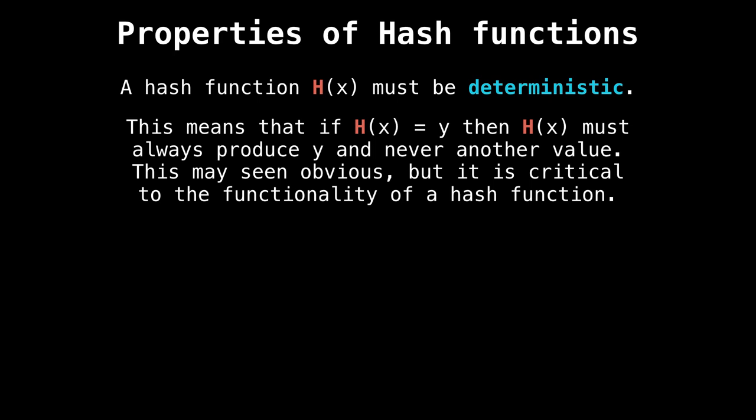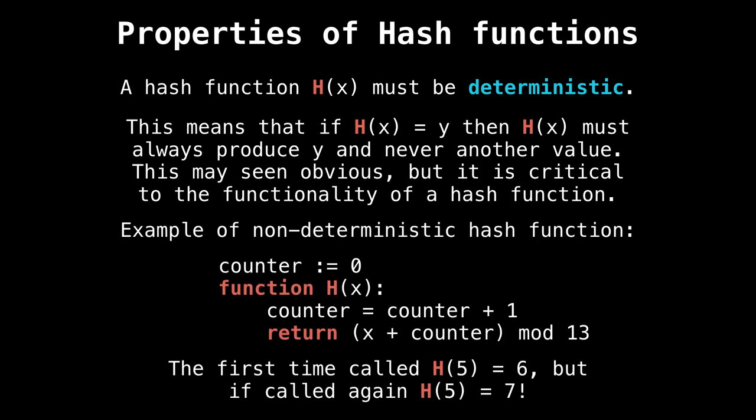Alright, another property of hash functions is that they must absolutely be deterministic. This means that if h of x produces y, then h of x must always, always, always produce y and never another value. This is super critical because this will screw up our hash table completely if this happens. We do not want this. So an example of a non-deterministic hash function is something that introduces, say, a global variable or some kind of randomness. You don't want that. So in this particular hash function, the first time I run it, the hash value for five is six. But then if I call it again, we've incremented the counter and now the hash value is seven. Uh oh, not good.